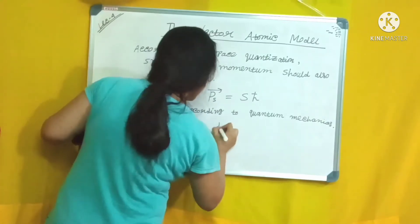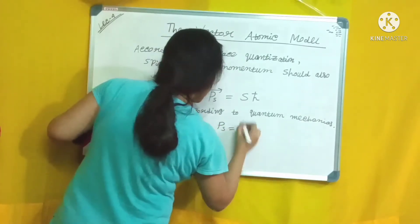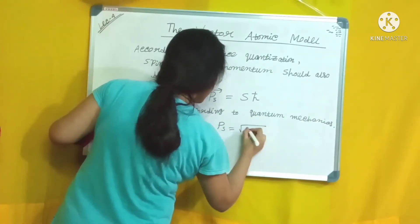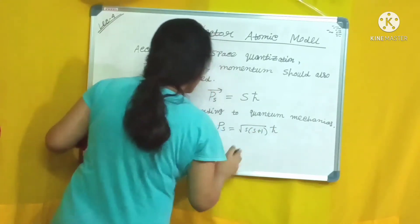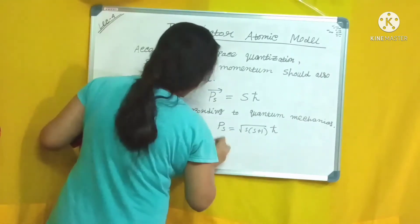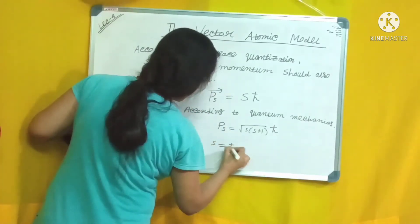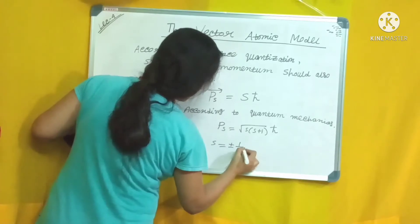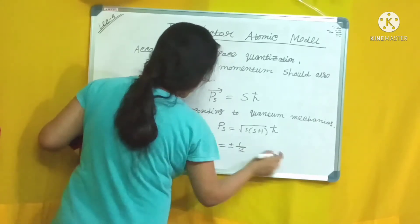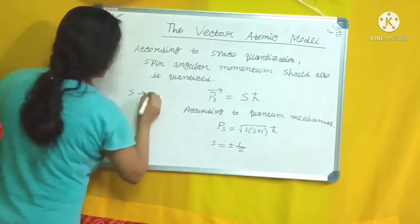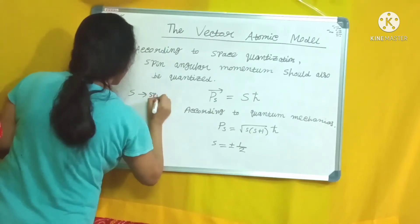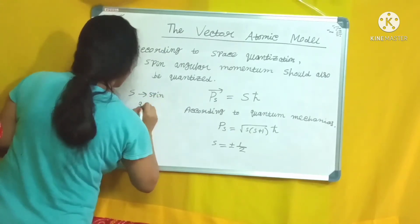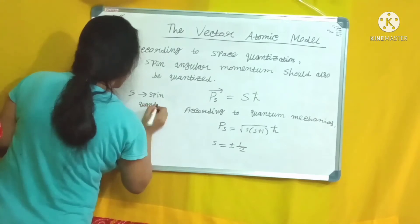ps = √(s(s+1))·ℏ. Here s can take only two values: plus half and minus half. This s is called the spin quantum number.